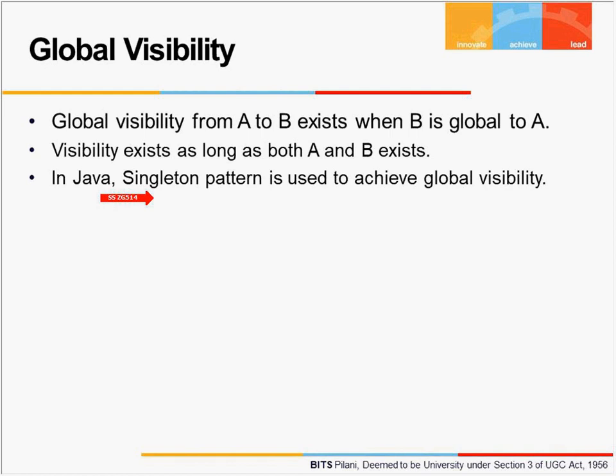The singleton pattern is what we will look at in the next session, where we start with design patterns — specifically the Gang of Four patterns, and the first pattern will be the singleton pattern. Through that we will understand how global visibility is achieved in Java, whereas in C++ global visibility can easily be achieved by declaring global variables.